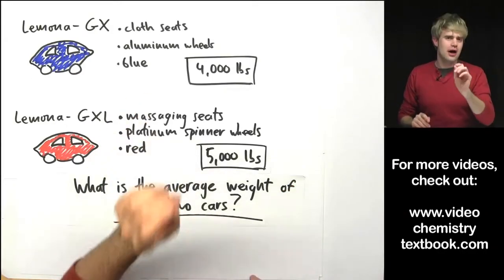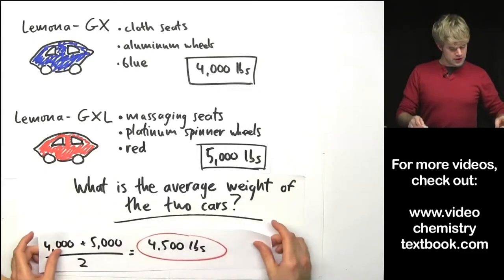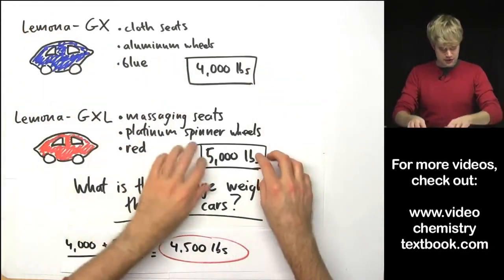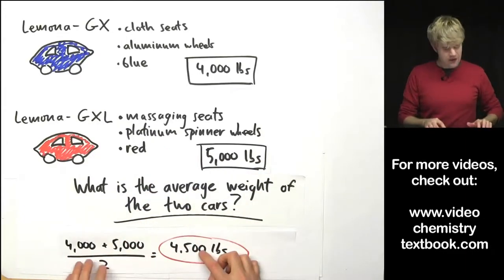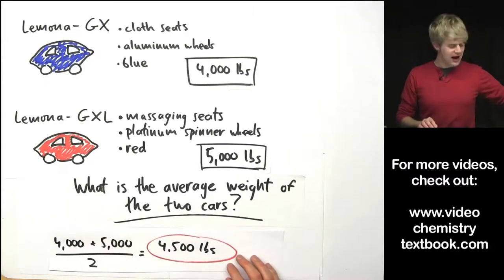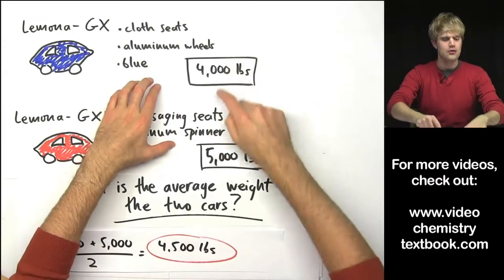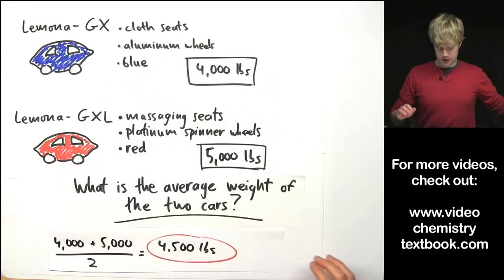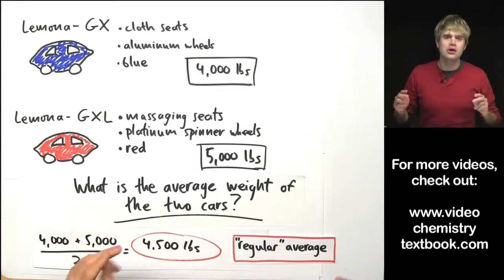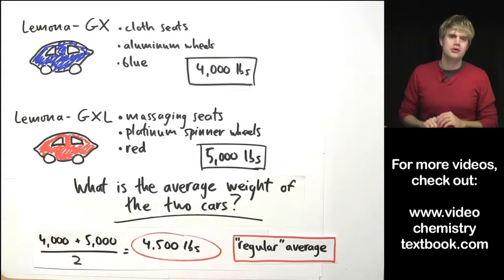Knowing what you probably already know about averages you could do this math. You could take 4,000 pounds for the GX, add it to 5,000 pounds for the GXL and then divide by 2 because we have two things here. That would give you an average of 4,500 pounds which gives us a number that is right between the weights of the two models. So I'm going to refer to this as a regular average. It's the kind of average that you've probably already learned how to do.